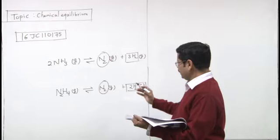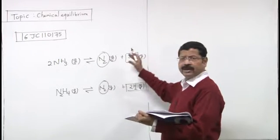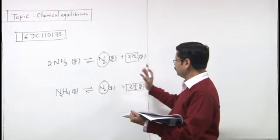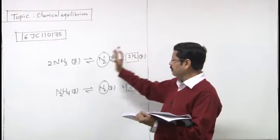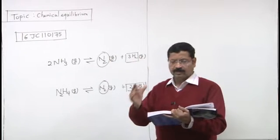To obviously Le Chatelier's principle lagega. Product side mein hi simultaneously equilibrated ho raha hai, so yeh backward jayenge. To x plus y se to kum hi hoga.